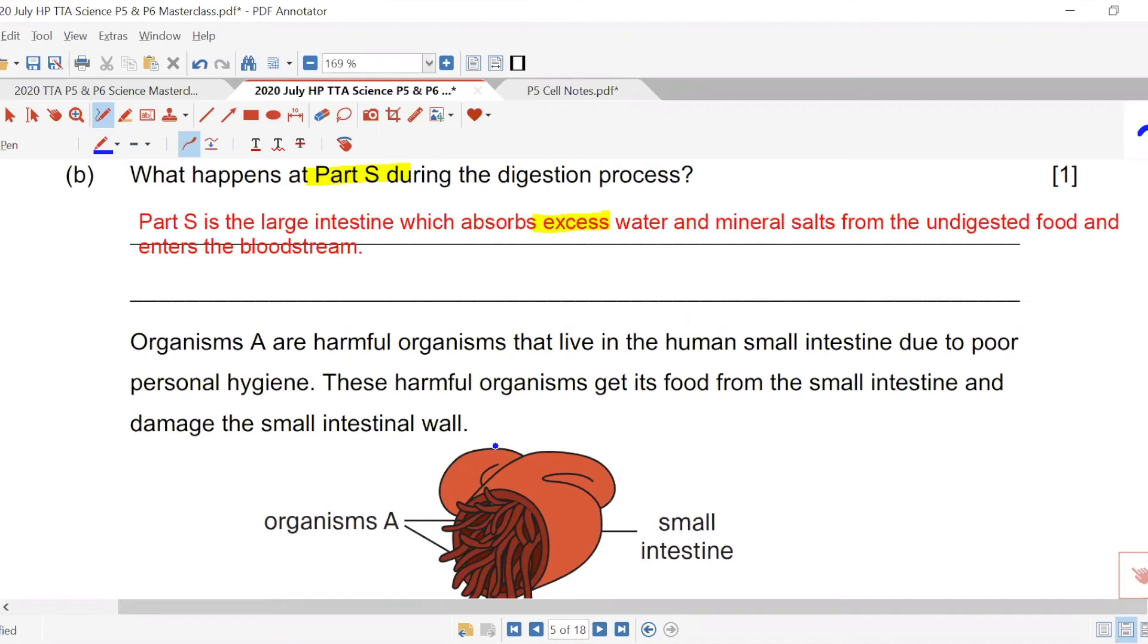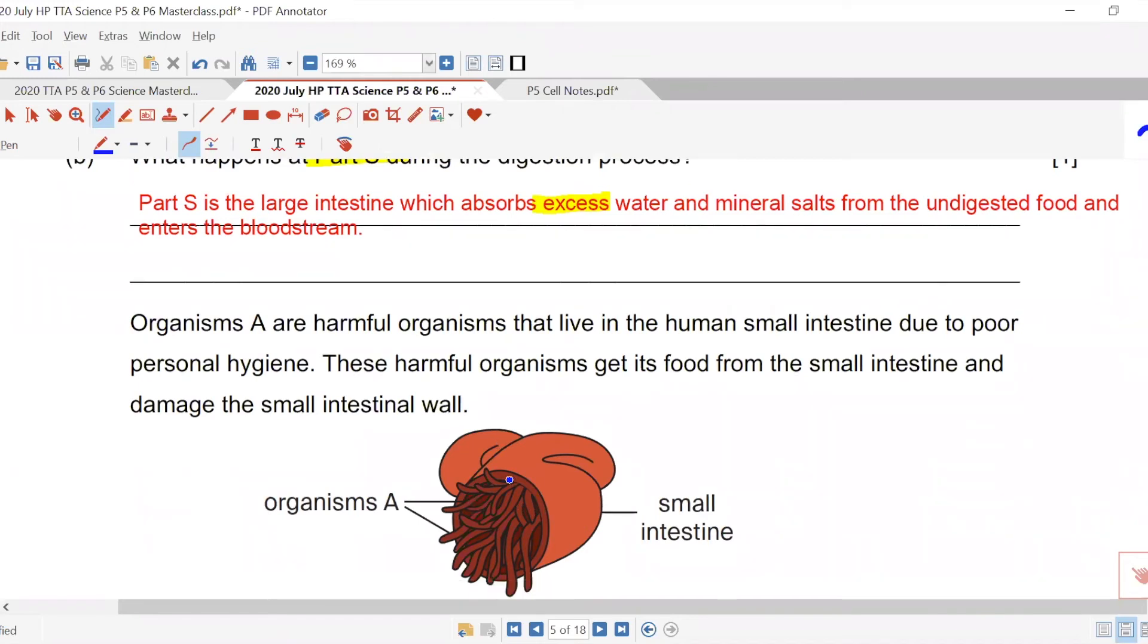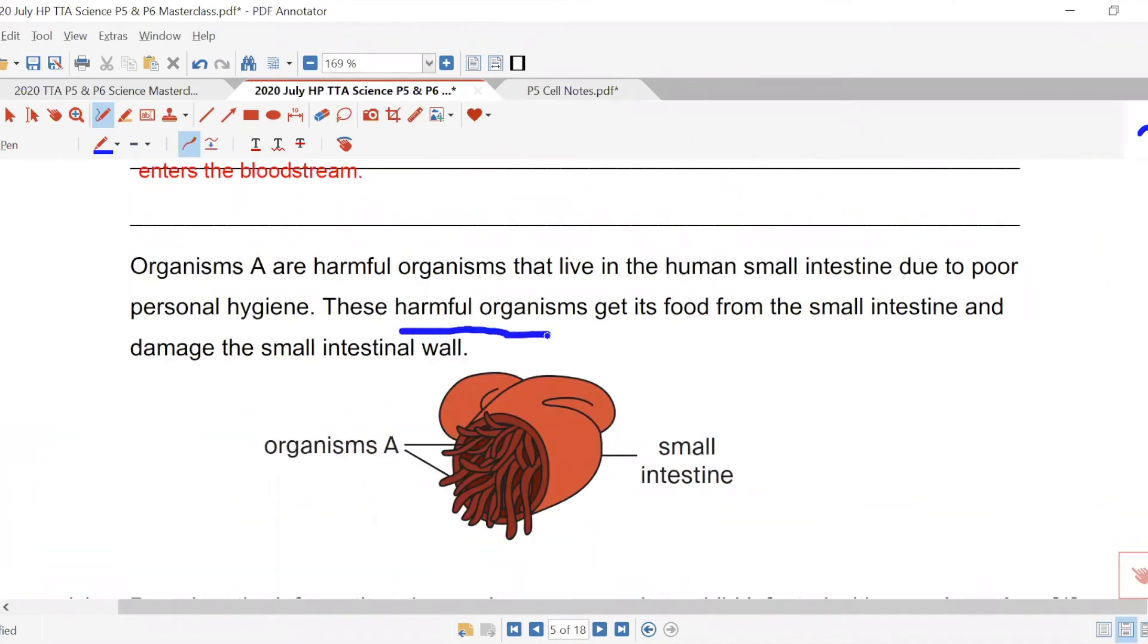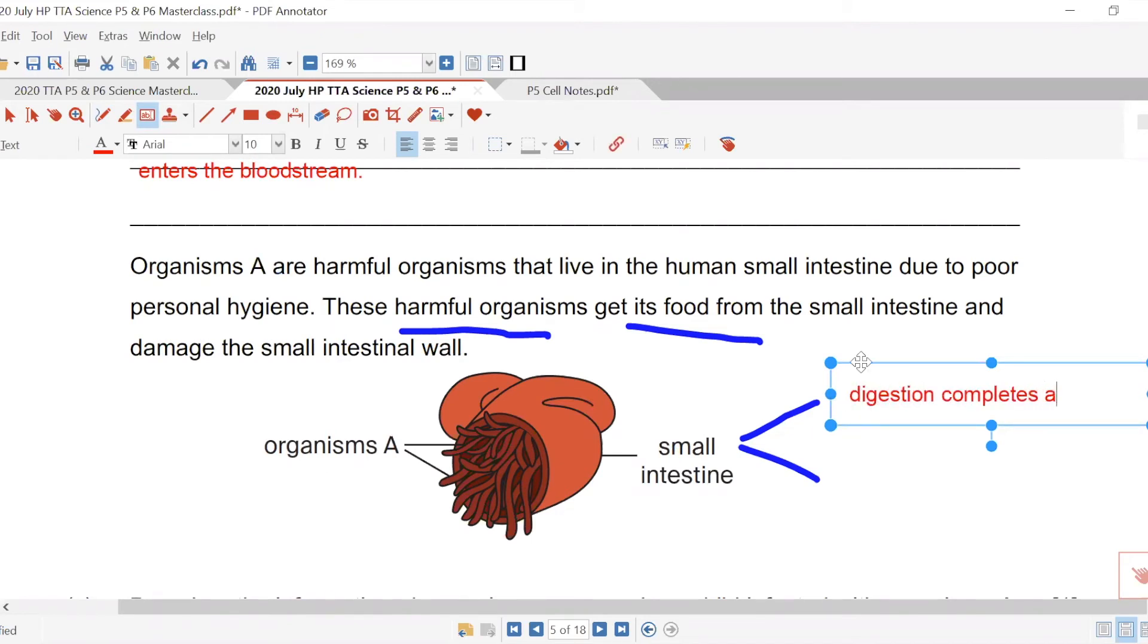So they have all these things that actually live in your body. These harmful organisms that get their food from the small intestine. So these organisms eat the digested food. Your small intestine function, there's two functions for small intestine. The small intestine, not only you have your digestion that completes here, completes at small intestine.